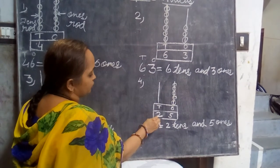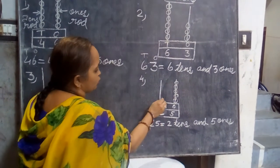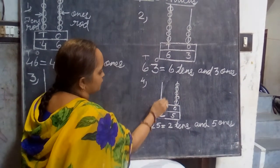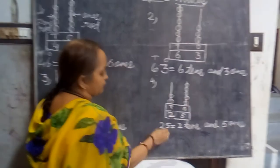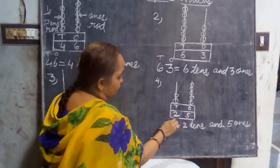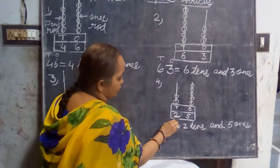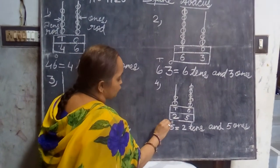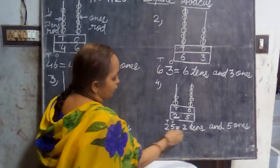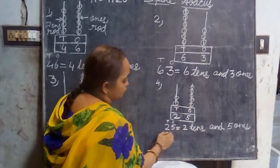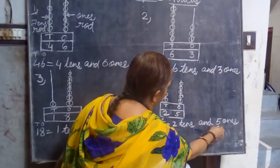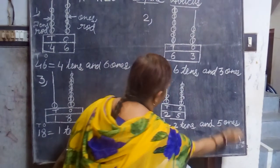And here at tens place, the number is two. So we will draw two: one, two. Now read. The number found is twenty-five. It means two tens and five ones.